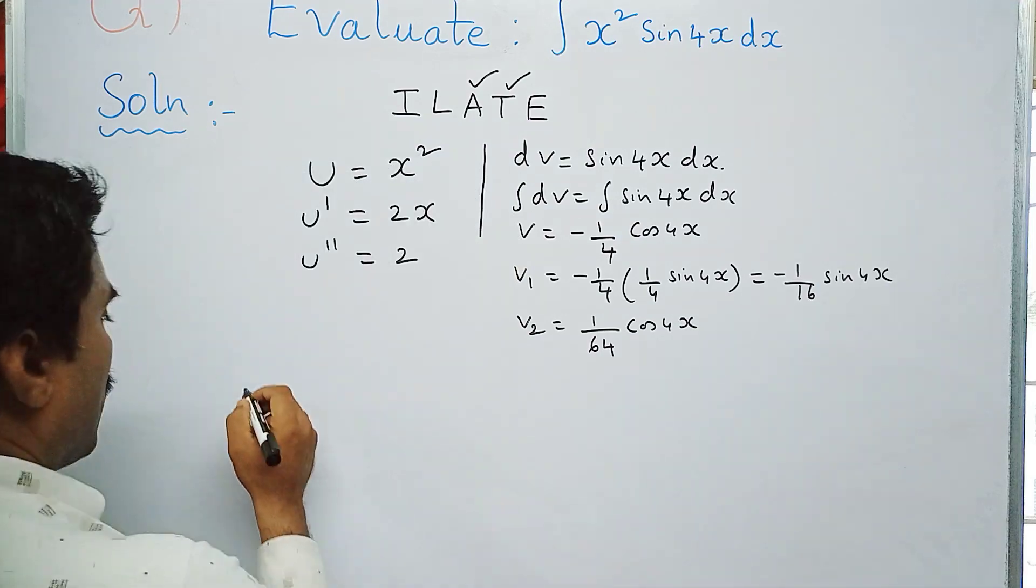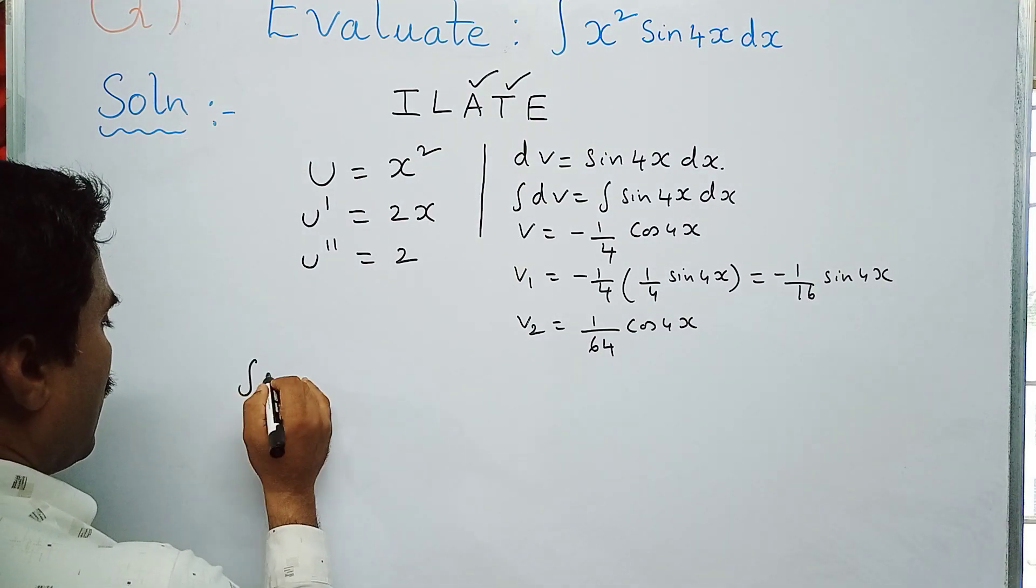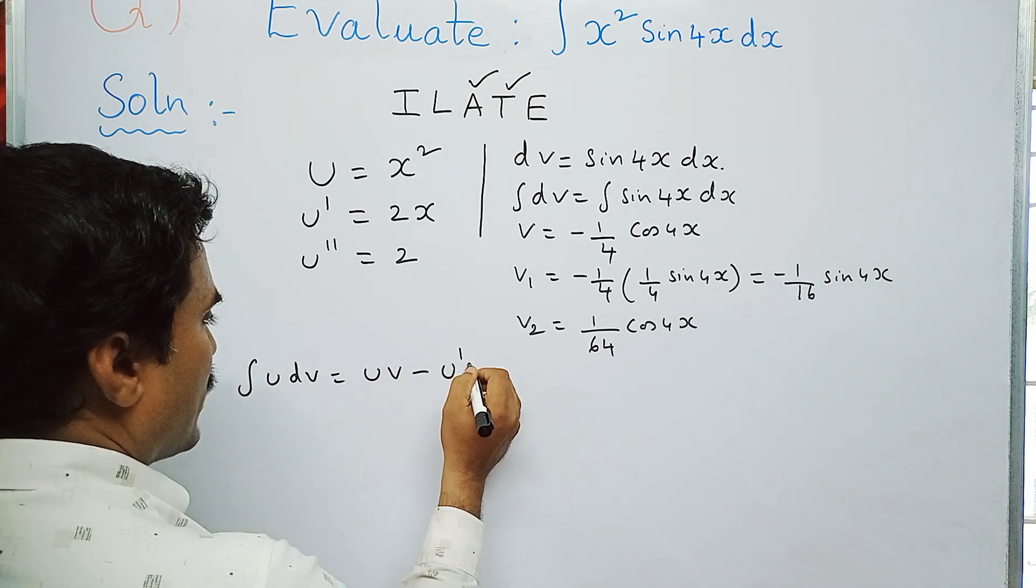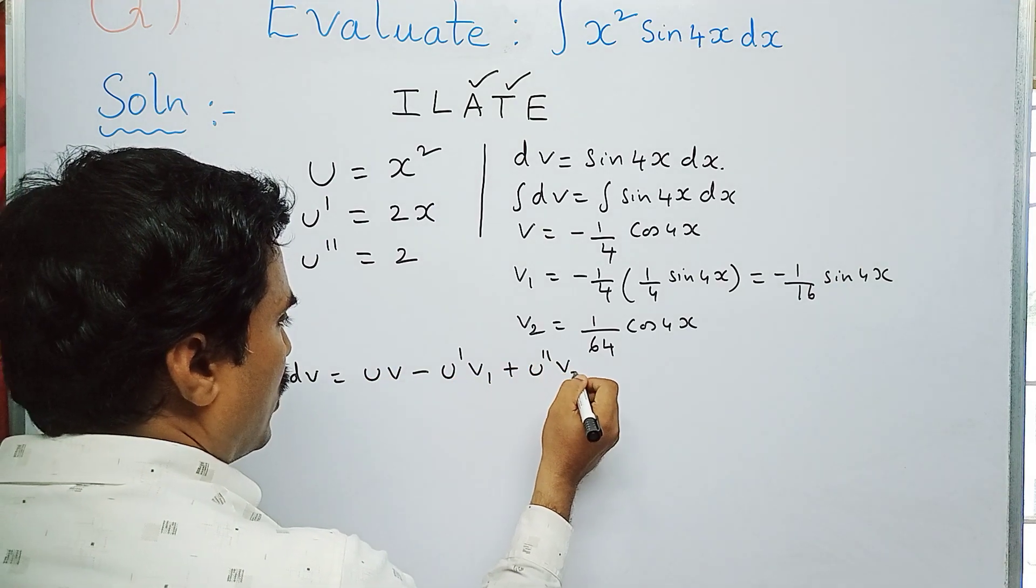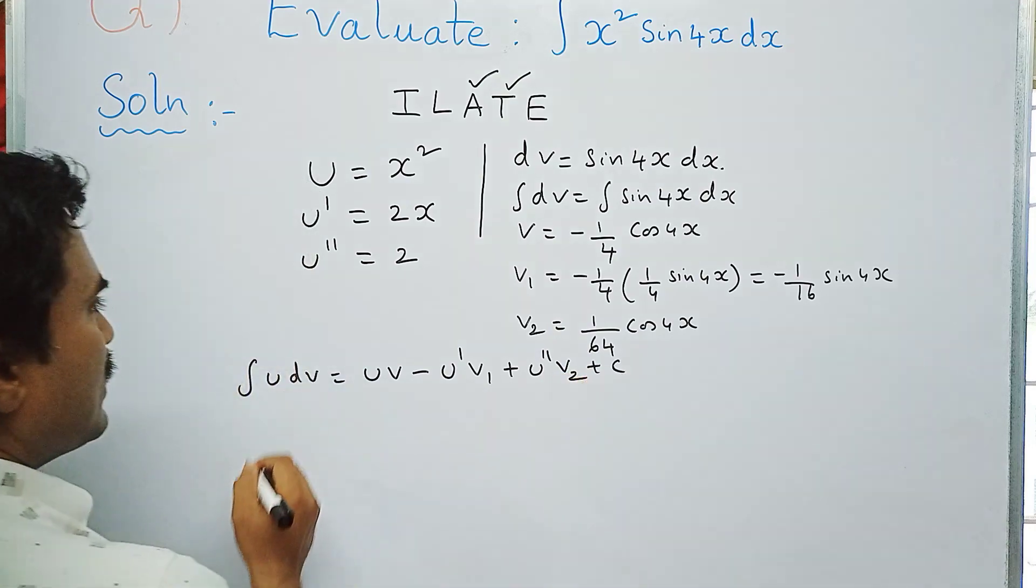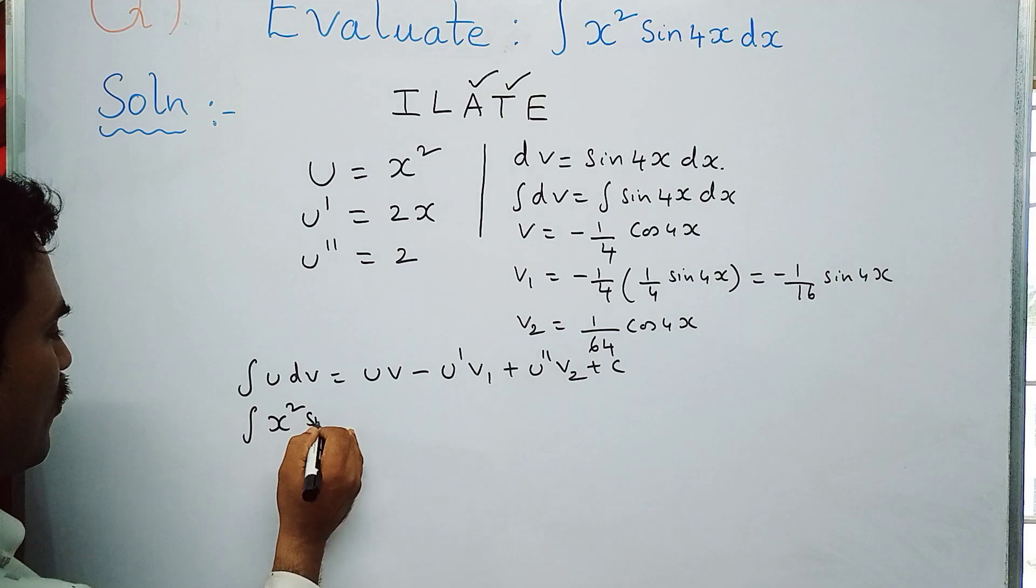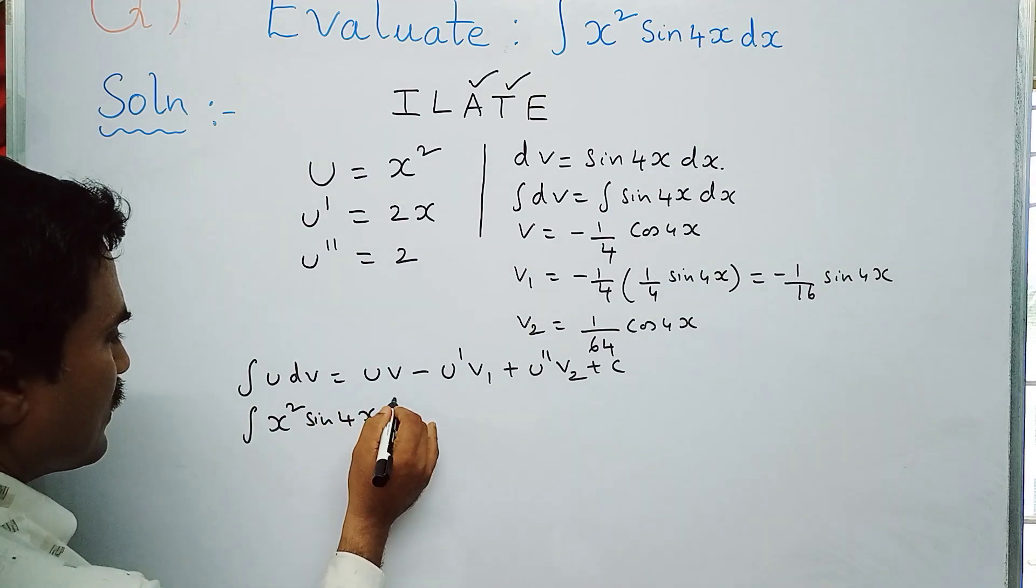Now apply that Bernoulli's formula, that is integral u dv equal to uv minus u dash v1 plus u double dash v2 plus c. So what is integral u here? U is x square, so integral x square sine 4x dx equals...